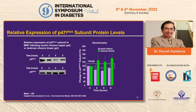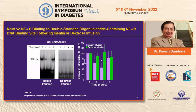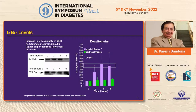The p47 key protein subunit of NADPH oxidase — which produces the superoxide radical, a reactive oxygen species — was also inhibited by insulin. Furthermore, NF-κB binding was inhibited dramatically by insulin, while IκBα levels increased, meaning the protein preventing NF-κB from moving into the nucleus was elevated while NF-κB itself was inhibited.